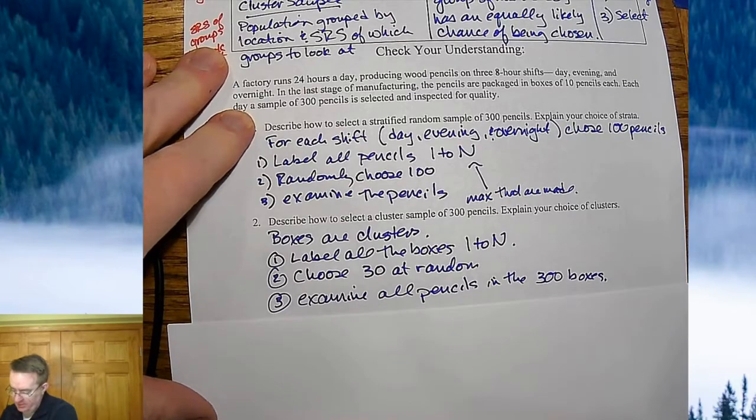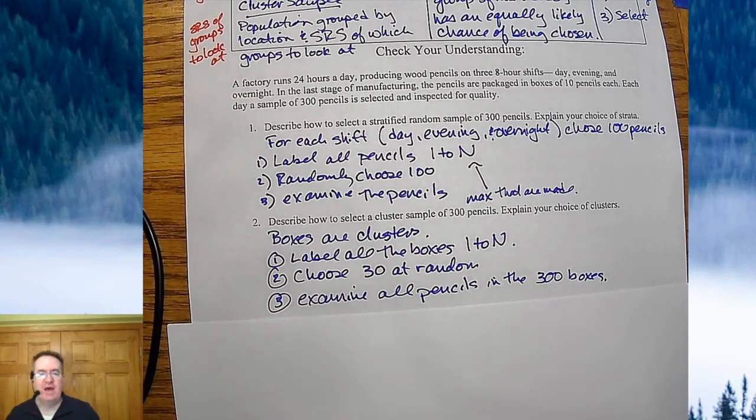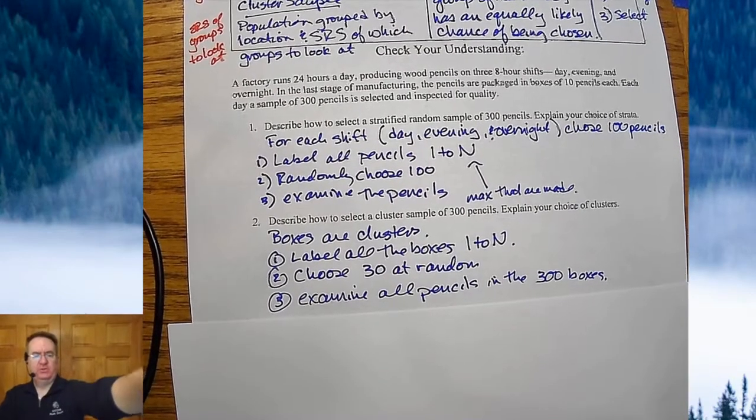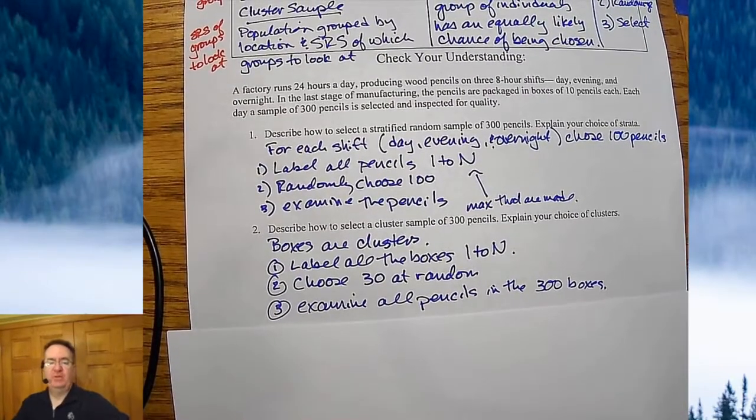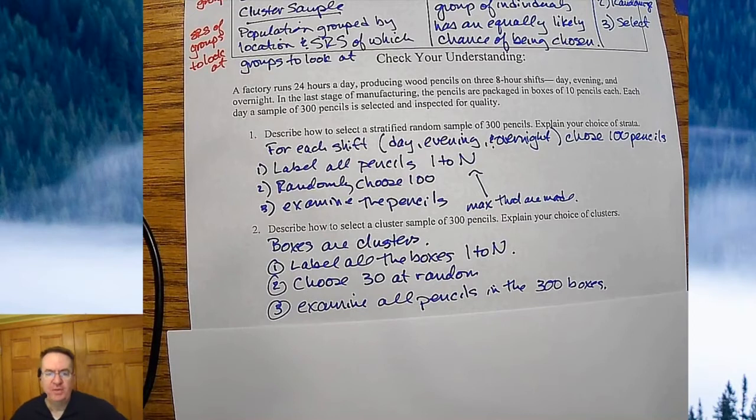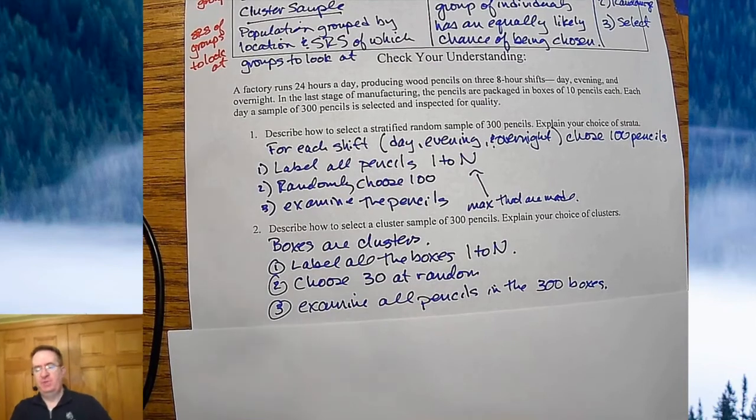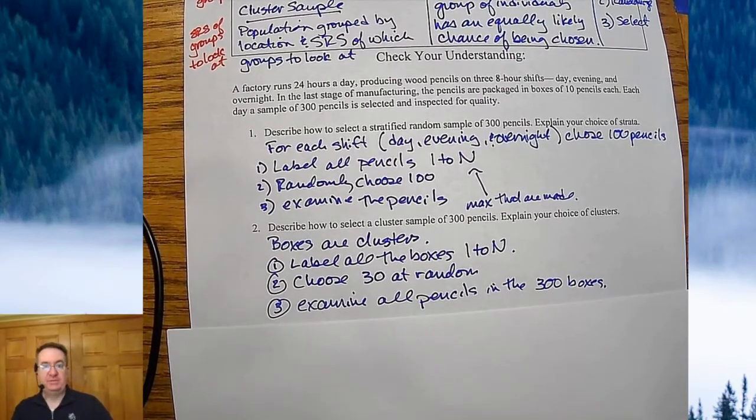The second one is cluster sample. Clusters would be the boxes of pencils. And so then you would just say, instead of labeling all the pencils, one through N, which is the maximum number, we're going to label all the boxes, one through however many boxes we have. And then we're going to go through and choose that. You're going to go through and then you'll choose 30 at random and examine all the pencils in those 30 boxes. So you're not choosing individual pencils, you're choosing boxes of pencils to examine.